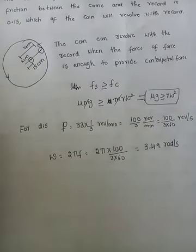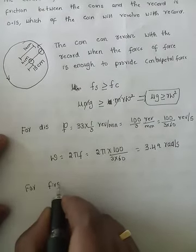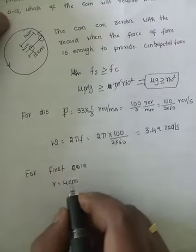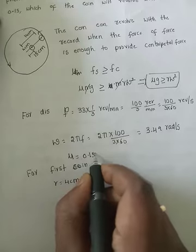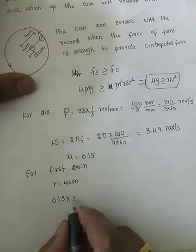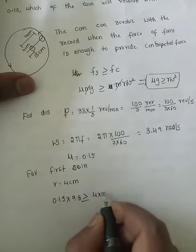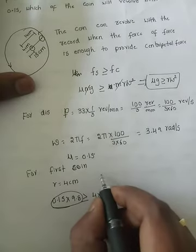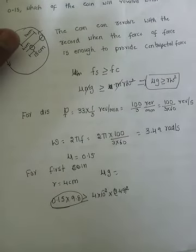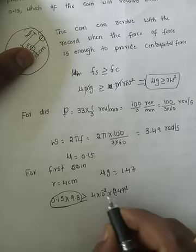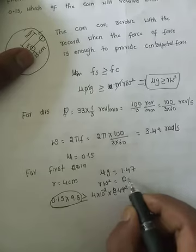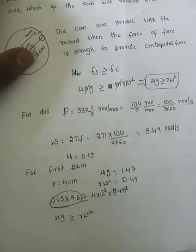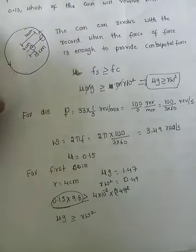For the first coin, radius = 4 cm = 4×10⁻² m. Checking condition: μg = 0.15 × 9.8 = 1.47, and rω² = 4×10⁻² × (3.49)² = 0.49. Since 1.47 > 0.49, the condition μg ≥ rω² is satisfied. The first coin will not slip off and will revolve with the record.